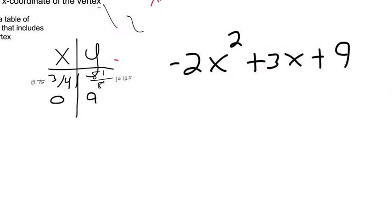So let's try to get some nice and easy points. If you plug in x equals 1 into this equation, you've got to do 1 squared first because exponents come first. 1 squared is 1. 1 times negative 2 gives you negative 2. Negative 2 plus 3 gives you 1. 1 plus 9 gives you 10.